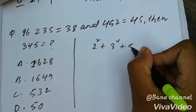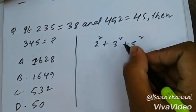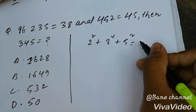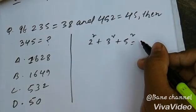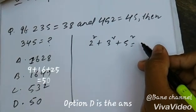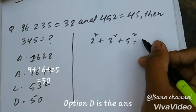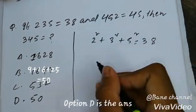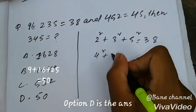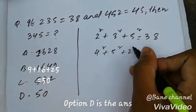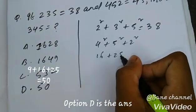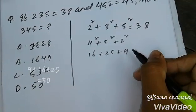2 squared plus 3 squared plus 5 squared: 4 plus 9 plus 25 equals 38. Next, 4 squared plus 5 squared plus 2 squared: 16 plus 25 plus 4 equals 45. So 3 squared plus 4 squared plus 5 squared: 9 plus 16 plus 25 equals 50. Option D is the answer.